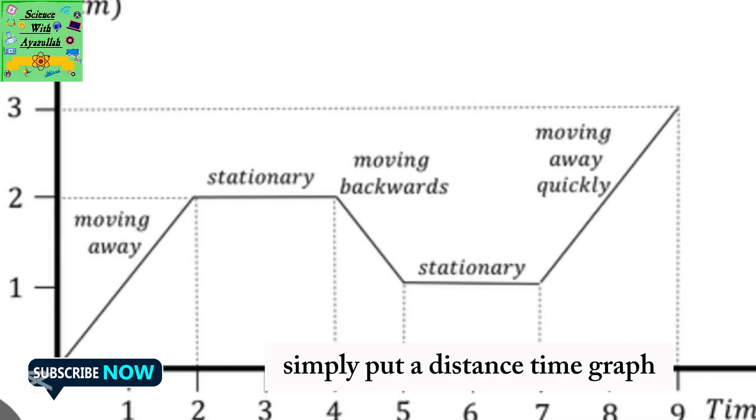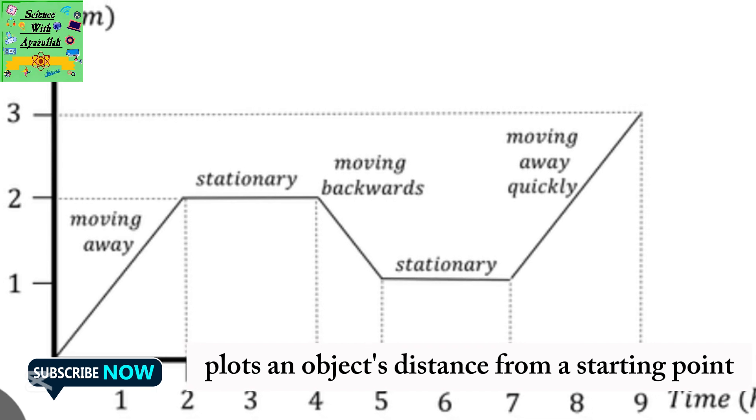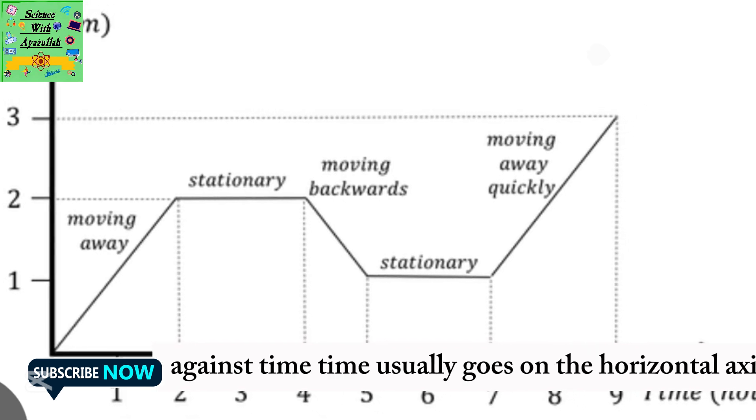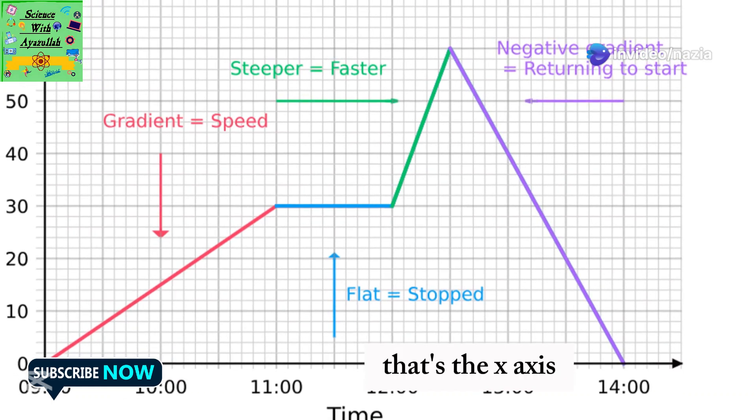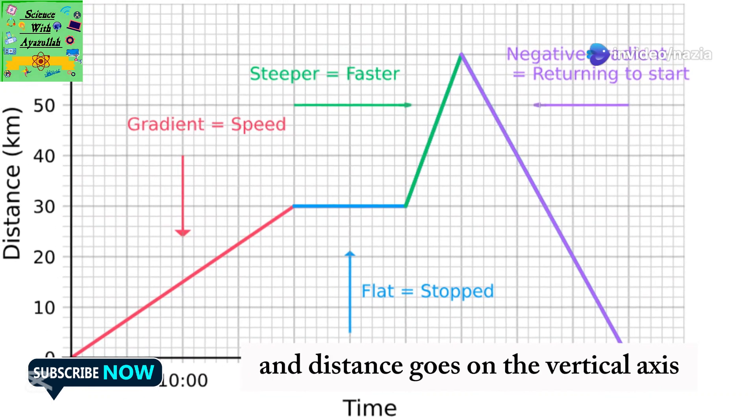Simply put, a distance time graph plots an object's distance from a starting point against time. Time usually goes on the horizontal axis, that's the x-axis, and distance goes on the vertical axis, the y-axis.